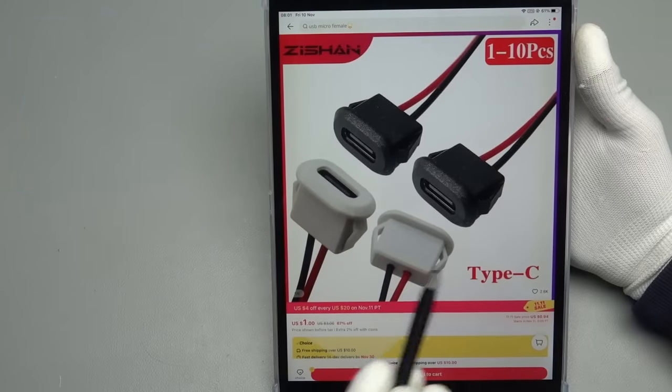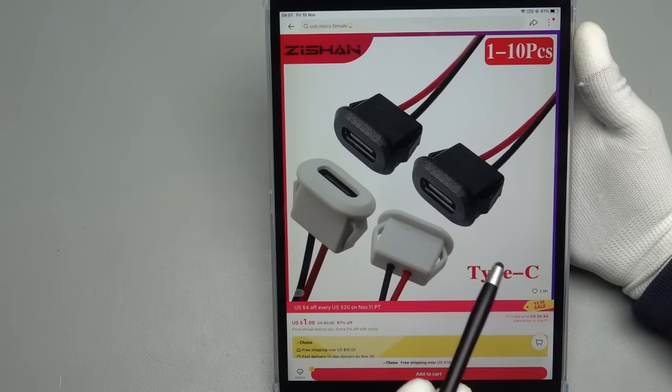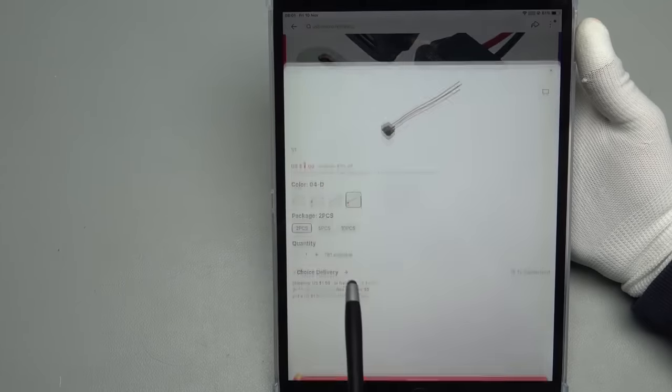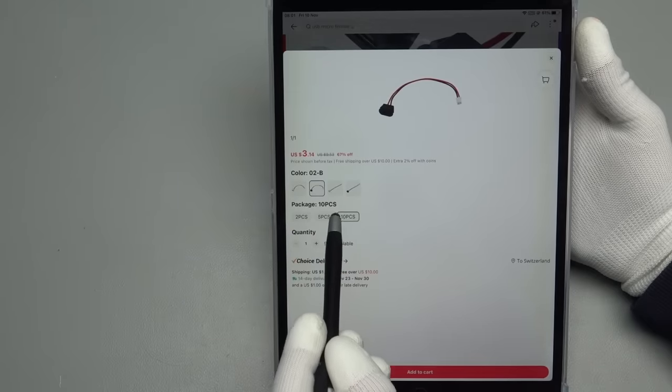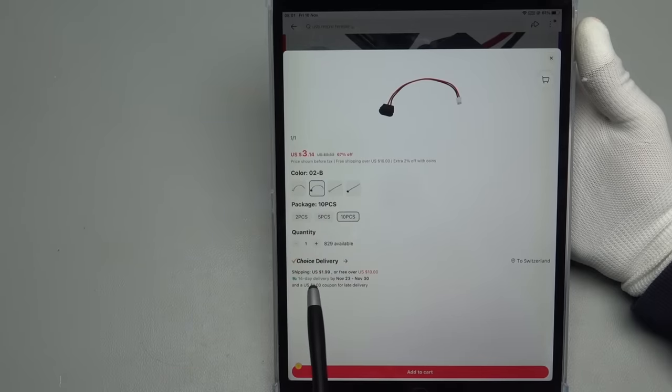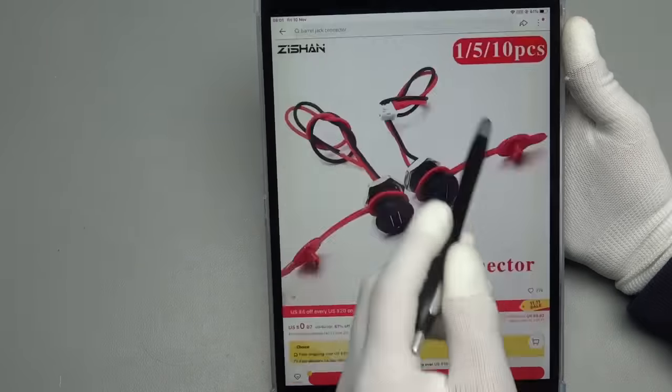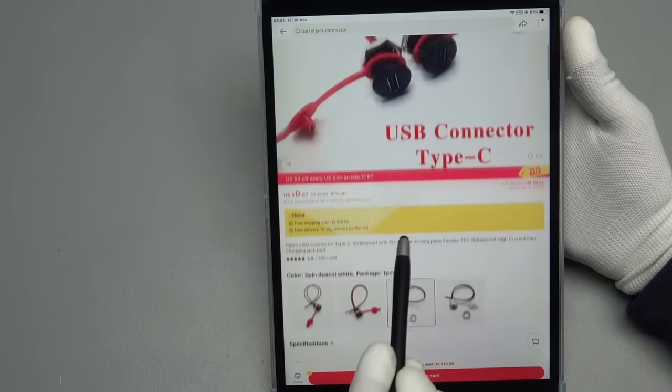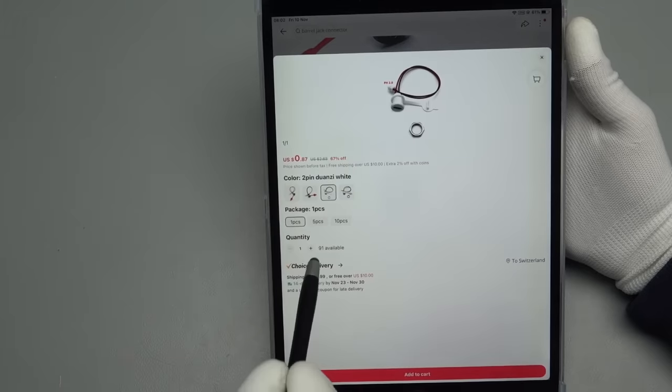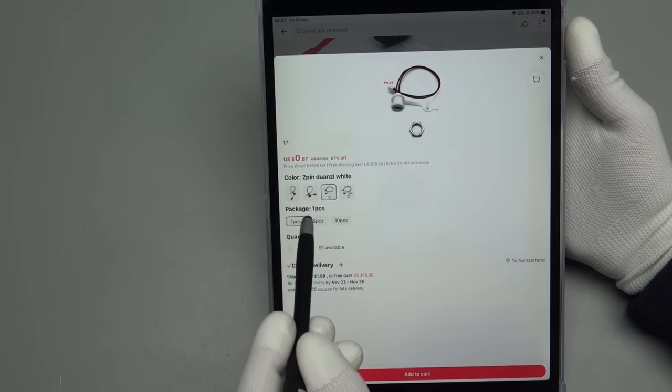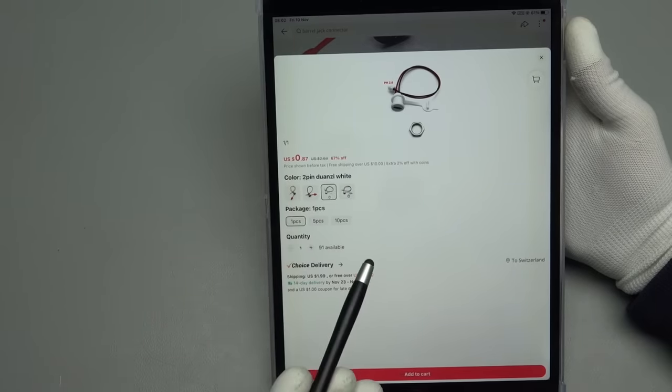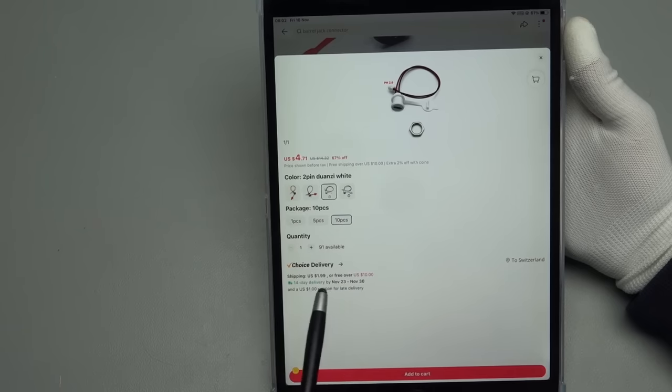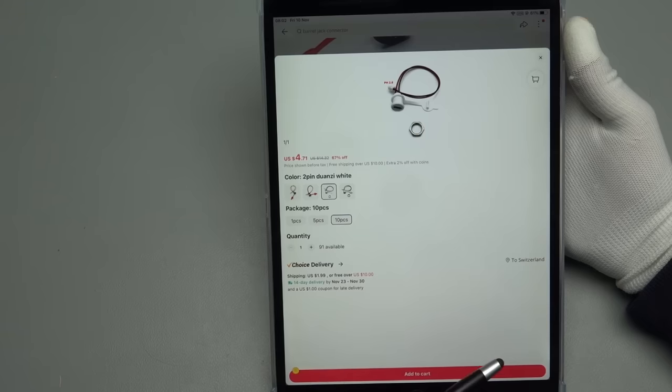By the way, here is the listing of these USB-C power connectors. These are the square ones. Two pieces are $1.00, ten pieces are $3.00, plus $2.00 shipping. The round with this cover, you get them also in 1, 5 and 10 pieces. One is $0.87, and 10 pieces is $4.71, and shipping also is around $2.00. You get them also in two colors, by the way.